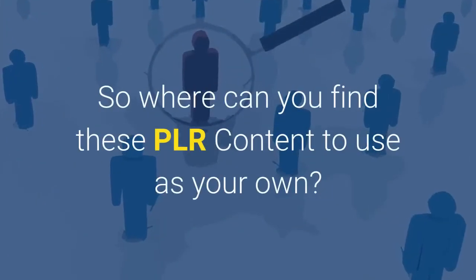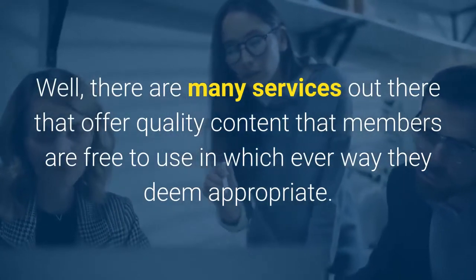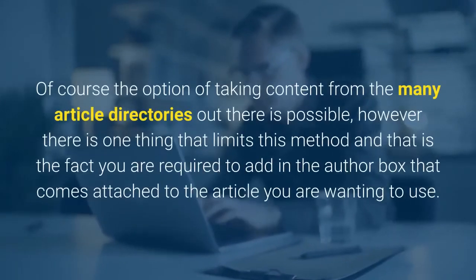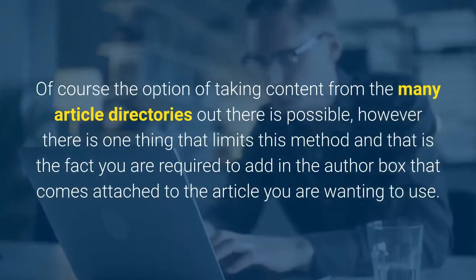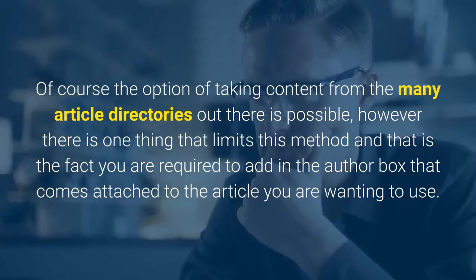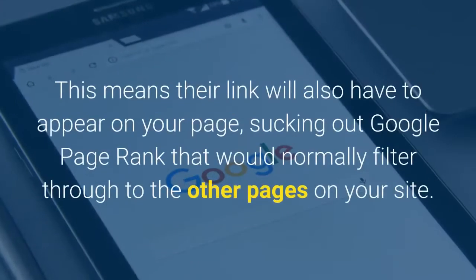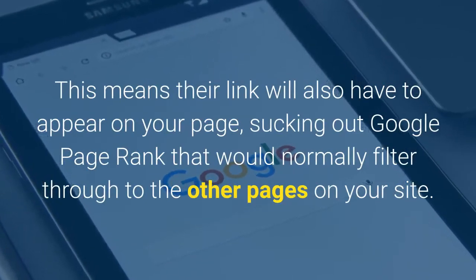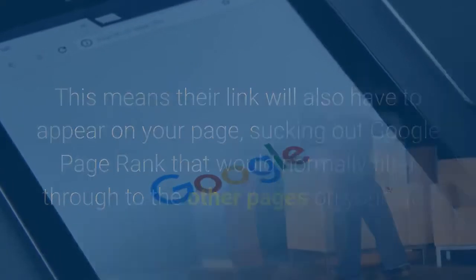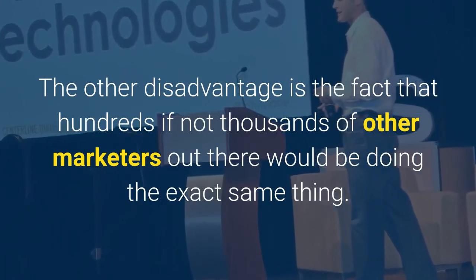So where can you find PLR content to use as your own? Well, there are many services out there that offer quality content that members are free to use in whichever way they deem appropriate. Of course, the option of taking content from the many article directories out there is possible; however, there is one thing that limits this method — you are required to add in the author box that comes attached to the article you want to use. This means their link will also have to appear on your page, sucking out Google PageRank that would normally filter through to the other pages on your site.